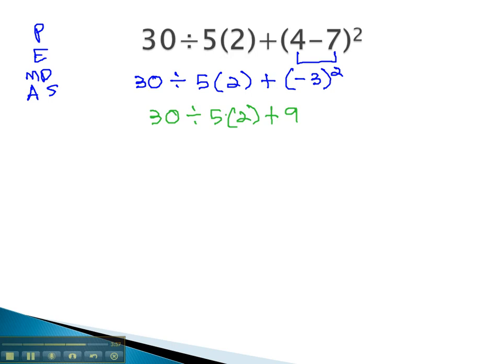Next, we do our multiplication and division, which must be done from left to right. Which means division comes first, reading left to right. 30 divided by 5 is 6, times 2, plus 9.